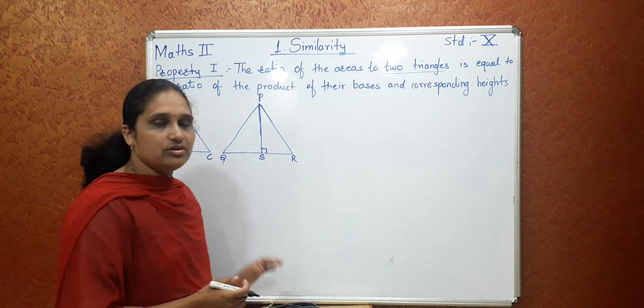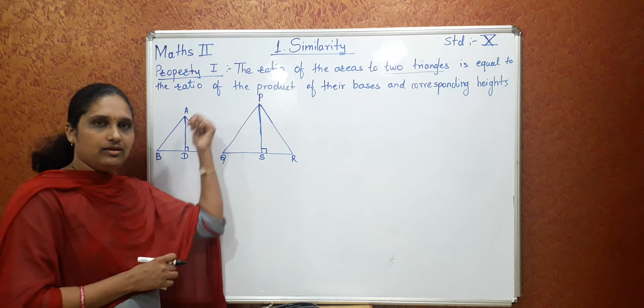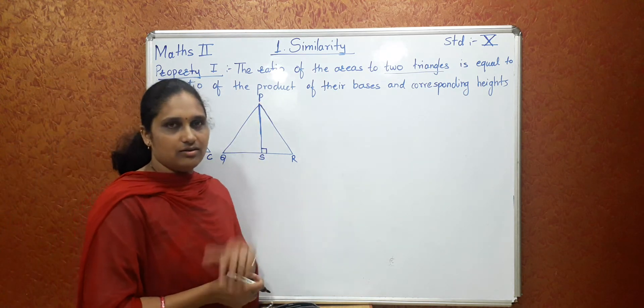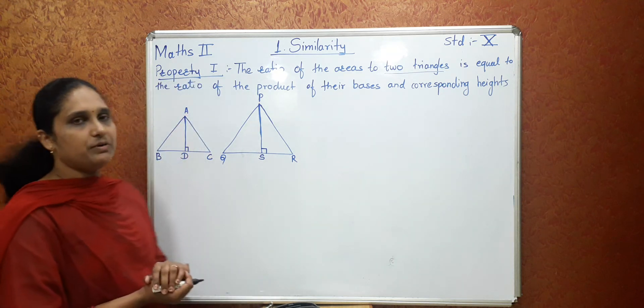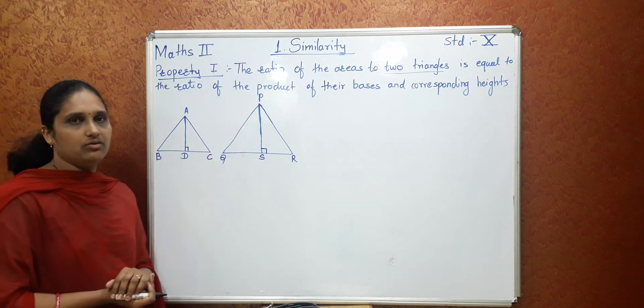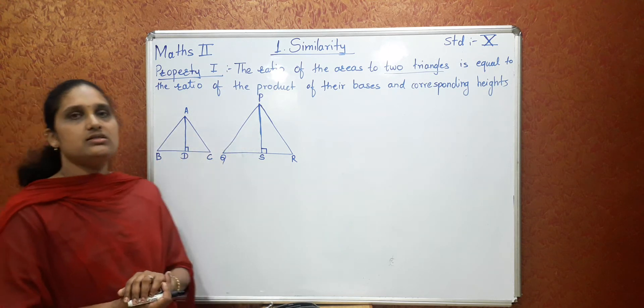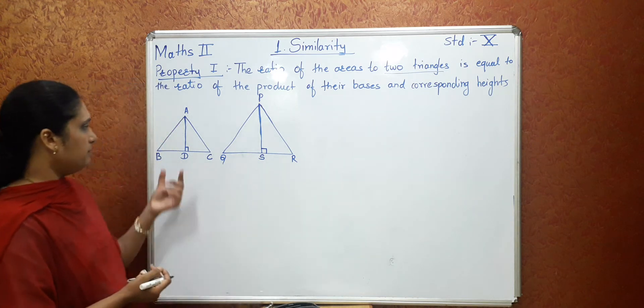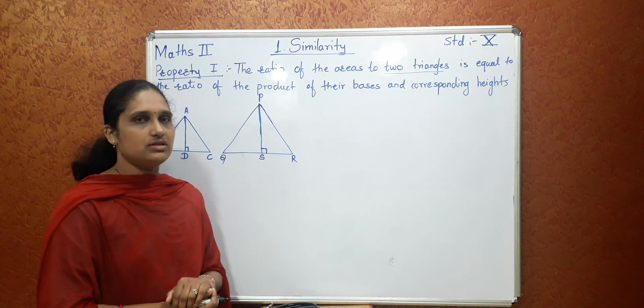So here I have already drawn two triangles. First is triangle ABC and triangle PQR. In triangle ABC, this AD is perpendicular to BC and PS is perpendicular to QR. So this perpendicular distance is nothing but the corresponding heights and BC and QR are the bases of the triangles.